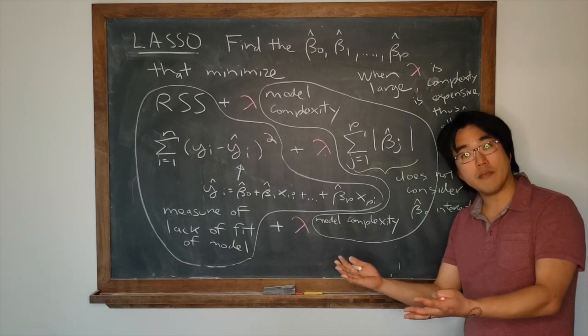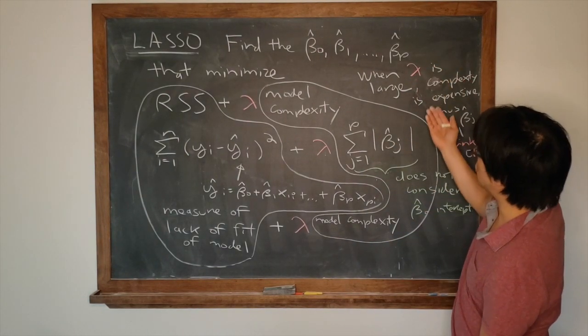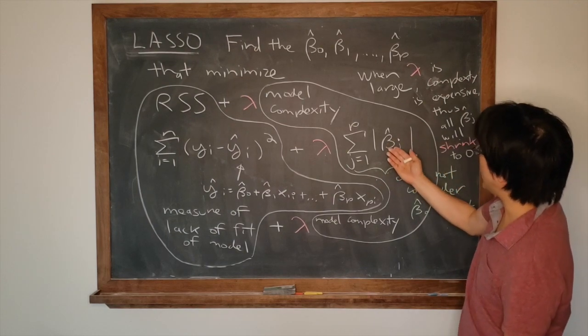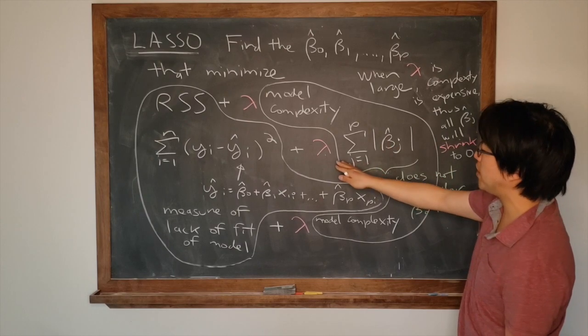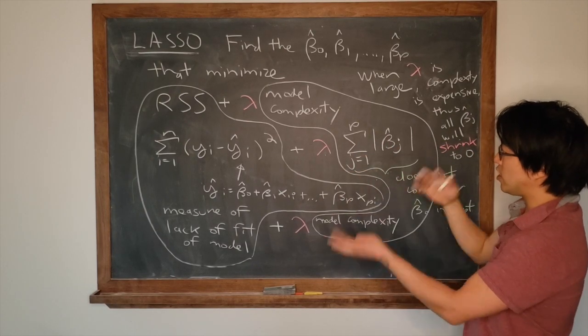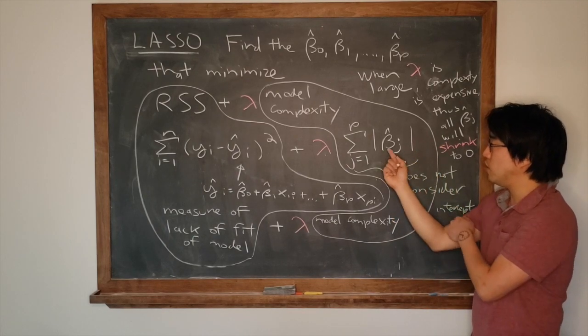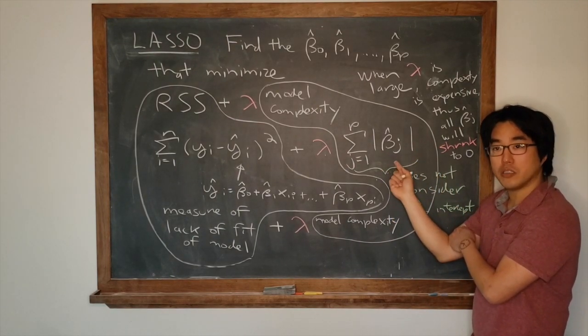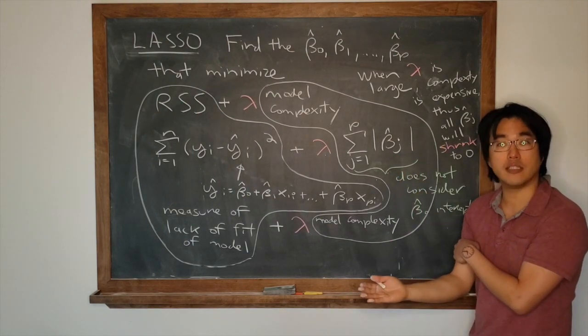So I highly recommend you go back and play with the slider. For large values of lambda, you're going to pay a price. Remember folks, we're trying to minimize things. But you're going to pay a price for complexity. So what's the optimization going to do? The optimization is going to return low complexity models where the beta hat j's are shrunk to zero.